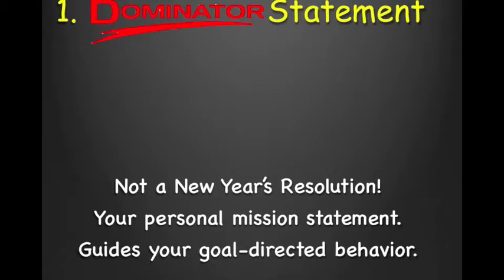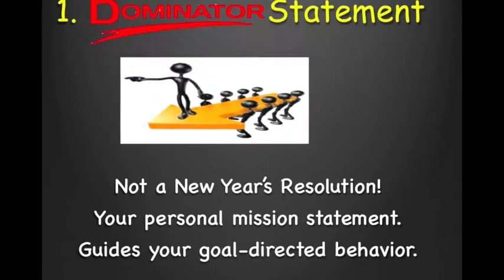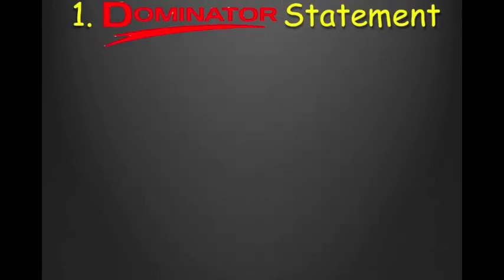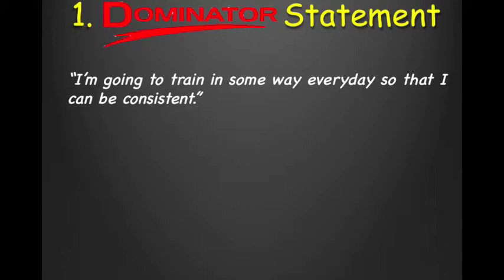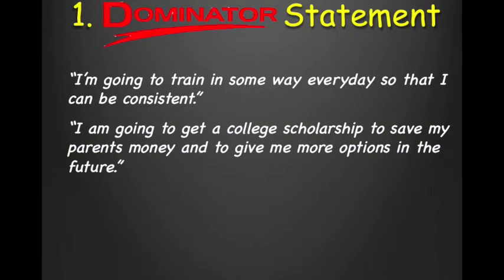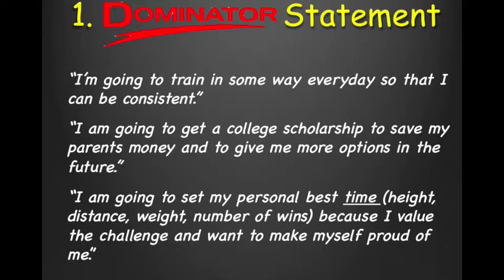The dominator statement helps you set up your goal-directed behavior. You can establish a dominator statement in many different areas like family and home, adventure, educational, fitness, and financial. Today, let's establish a value-based goal in athletics. Here are a few examples: I'm going to train in some way every day so that I can be consistent. I'm going to get a college scholarship to save my parents money and give me more options in the future. I'm going to set my personal best time, height, distance, or weight because I value the challenge and want to make myself proud.